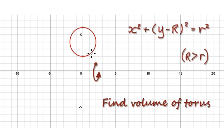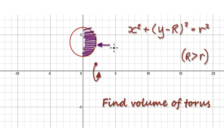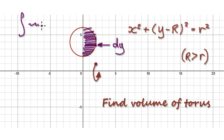To work out the volume of the 3D solid, we are going to sum up all the shells. Looking at the thickness of this one particular slice here, the thickness associated with this slice is dy. So we need to integrate with respect to dy.